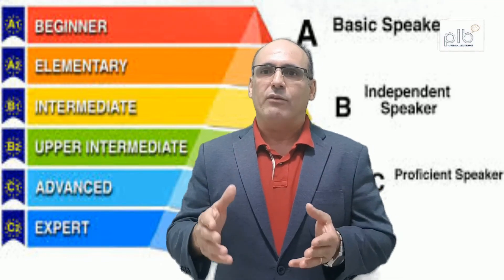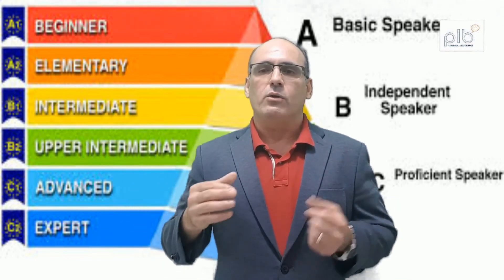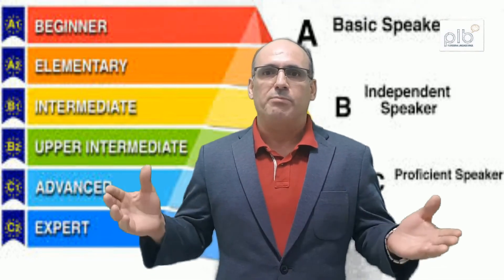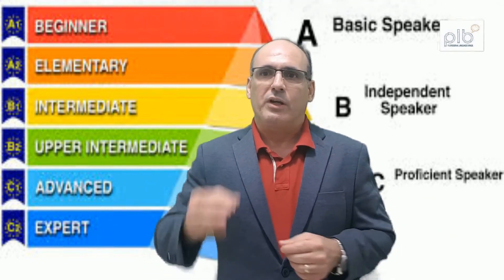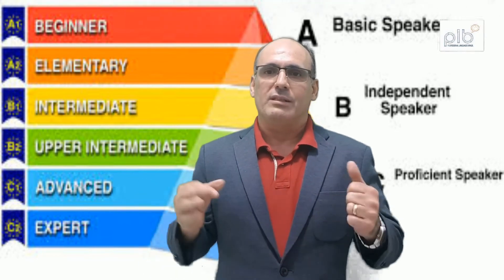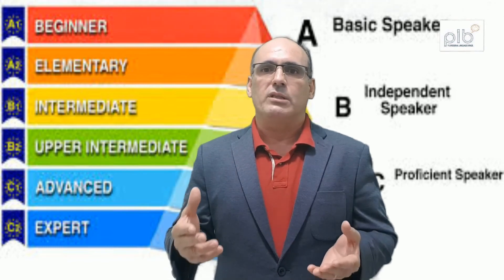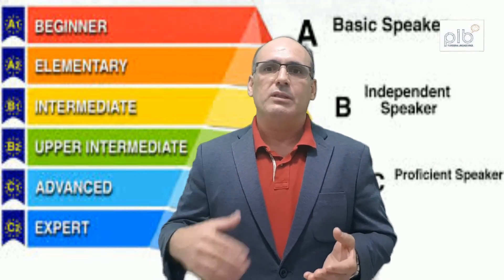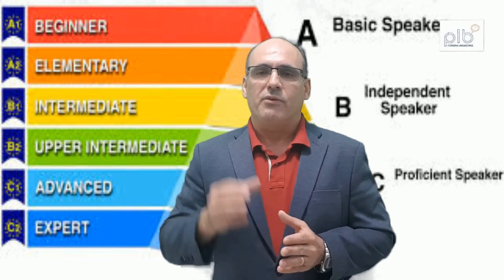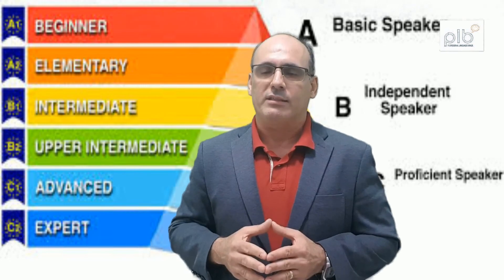The C2 level is the proficient level. The student at this level can understand with ease virtually everything heard or read. He or she can summarize information from different spoken and written sources, reconstructing arguments and accounts in a coherent presentation. He or she can express himself or herself spontaneously, very fluently and precisely, differentiating finer shades of meaning even in more complex situations.